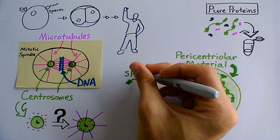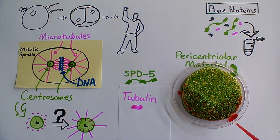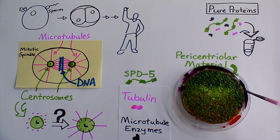This sponge selectively soaks up tubulin and enzymes that help build microtubules. Once these components are concentrated inside the sponge, microtubules start to form.